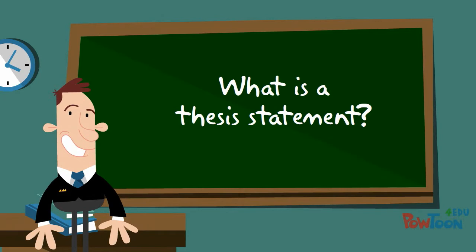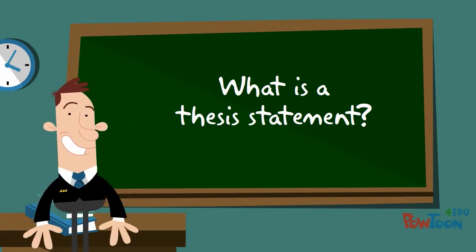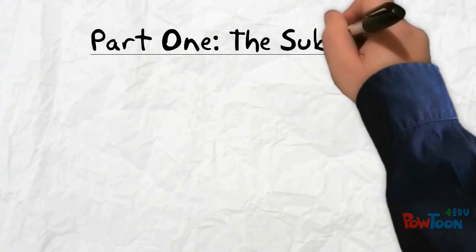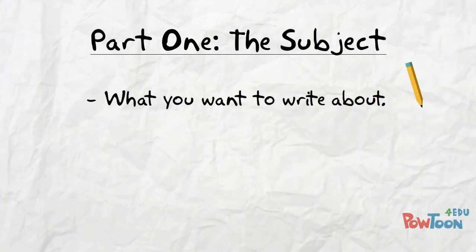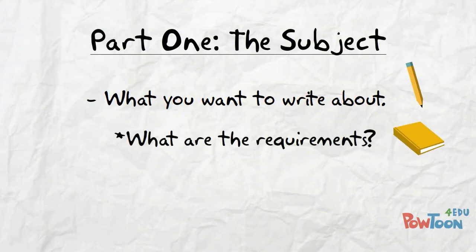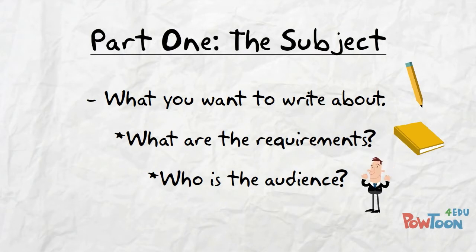What is a thesis statement? There are generally three parts to a great thesis statement. Part one: the subject. The subject is what you want to write about. Be sure to understand the assignment's requirements and the audience — that will help determine the subject and how specific you need to make the subject.